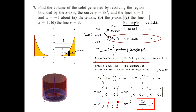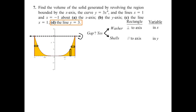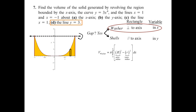Lastly, I'm going to rotate about the line y equals 3. Yes, there's a gap between your region and your axis. We have to decide between washer or shells. The rectangle for washer will be perpendicular to the axis; the rectangle for shells will be parallel to the axis. The washer this time will be in x, and the shell will be in y. I'm going to choose washer. The formula: pi times the integral of the outer radius squared minus the inner radius squared from a to b.